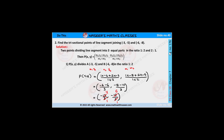Page number 176, chapter 7, coordinate geometry, second problem. Find the trisectional points of the line segment joining (-3, -5) and (-6, -8). We already know 2 points dividing the segment into 3 equal parts in the ratio 1:2 and 2:1 are the trisectional points. We use the section formula: P(X, Y) = ((M1·X2 + M2·X1)/(M1+M2), (M1·Y2 + M2·Y1)/(M1+M2)).